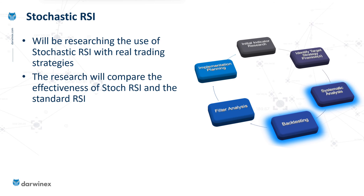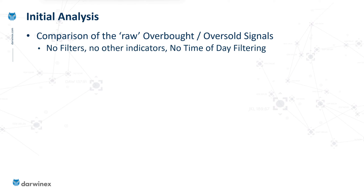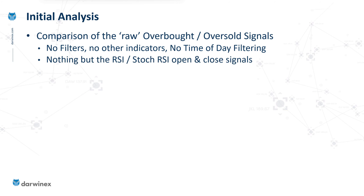The systematic analysis will be performed predominantly via backtesting. This is an initial analysis, so we won't be completing the strategies today, but what we will do is perform a comparison of the raw overbought oversold signals. At this stage, I won't be introducing any filters or any other indicators. There won't be any time of day filtering, so the charts I present today are from nothing more than the RSI and Stochastic RSI open and close signals.